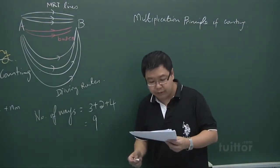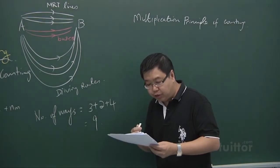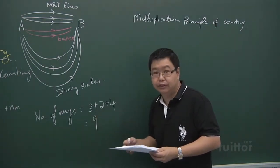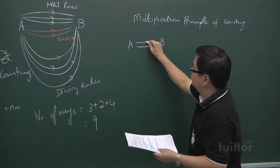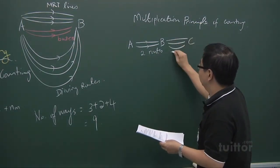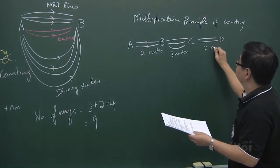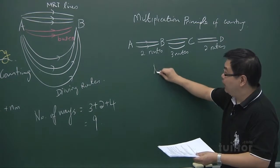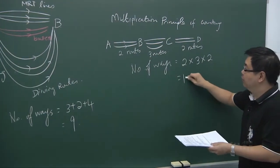The multiplication principle of counting states that if a process can be performed in m stages, and there are n1 choices in the first stage, n2 choices in the second stage, up to nm choices in the last stage, the total number of choices is the product of these choices. For example, you move from A to B with two possible routes, then B to C with three routes, then C to D with two routes. The number of ways to move from A to D is two times three times two, giving you twelve ways.